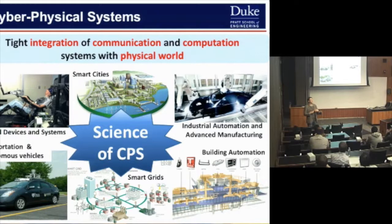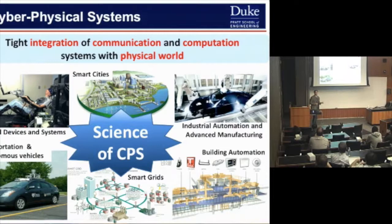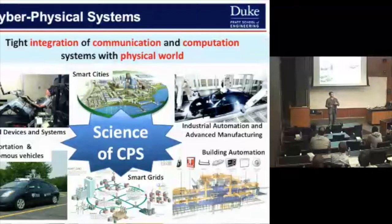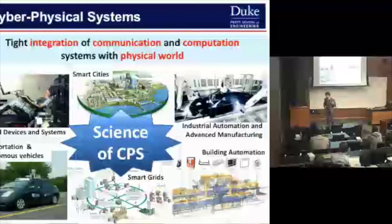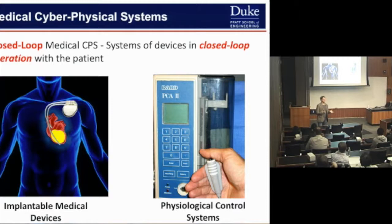There is something called the science of cyber-physical systems that tries to provide answers to how we can systematically build these systems — how can we systematically build control algorithms, synthesize code from them, and guarantee that when you end up with the final design it does what it is supposed to do? We are increasingly betting our lives on these kinds of systems. There is no one solution that fits all; you must adapt your design methodology to the particular problem you are considering.